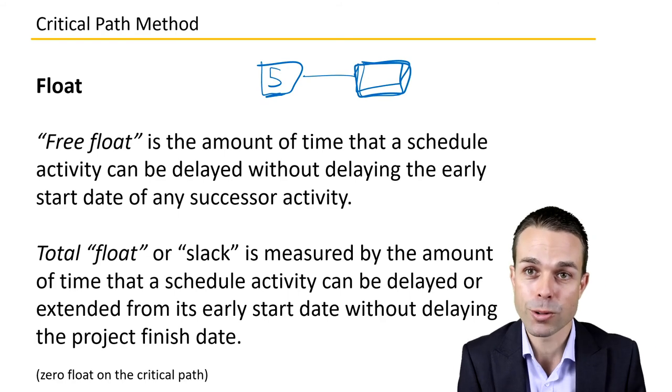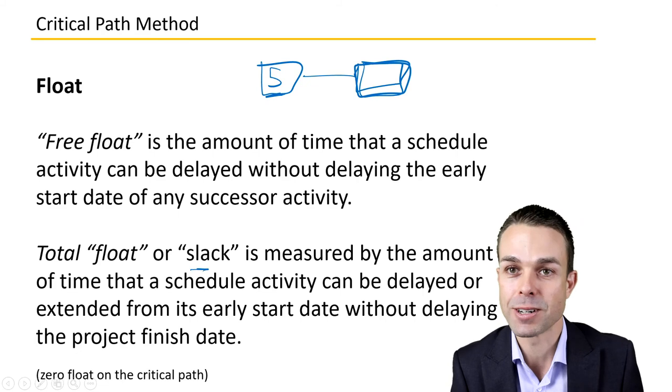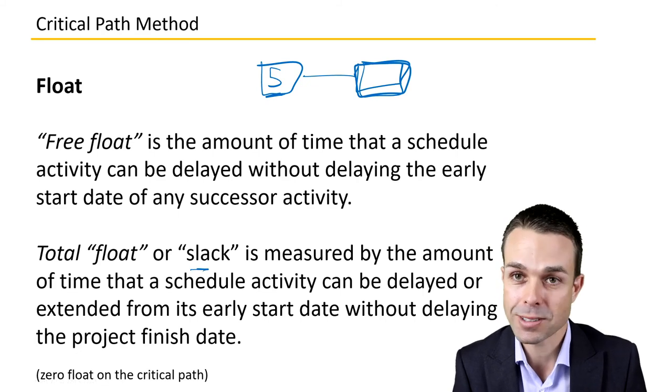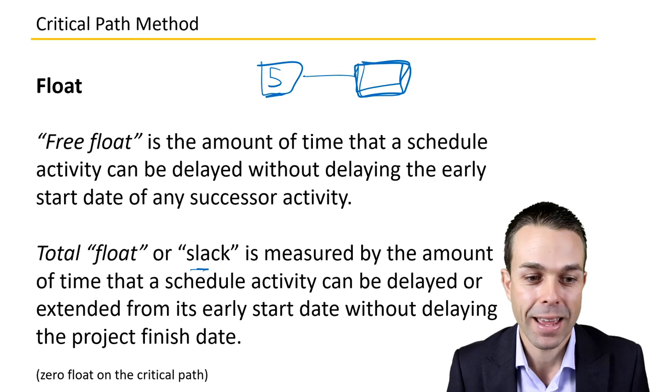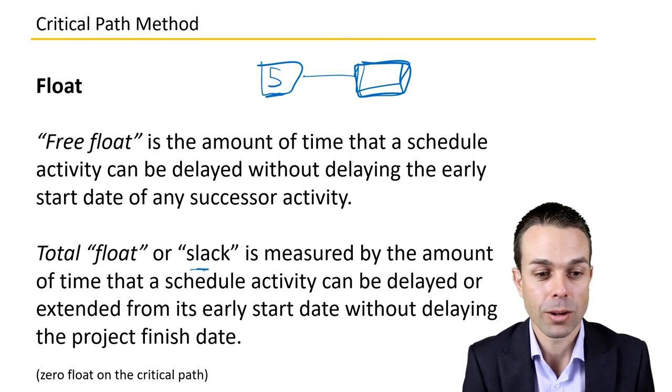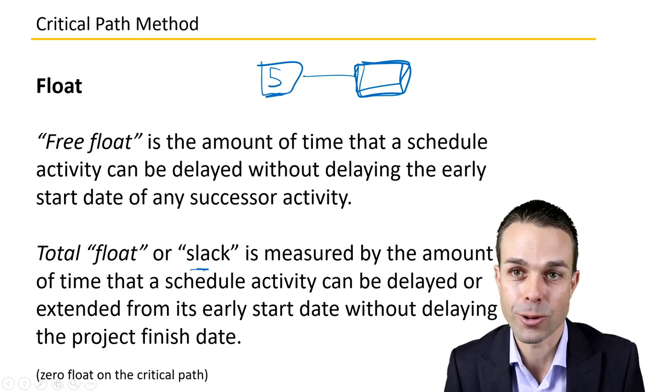Now, total float or project slack is measured by the amount of time that a schedule activity can be delayed or extended without delaying the project finish date. And so zero float, as we said, is shown on the critical path. So there's no leeway on that critical path.